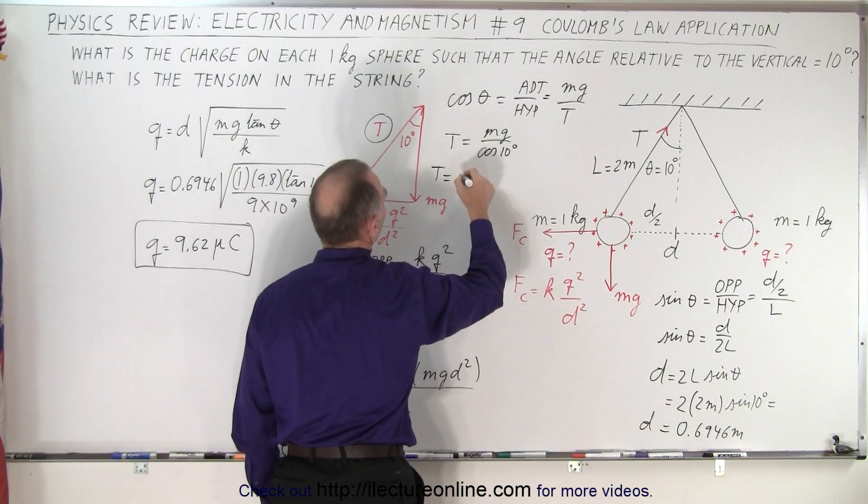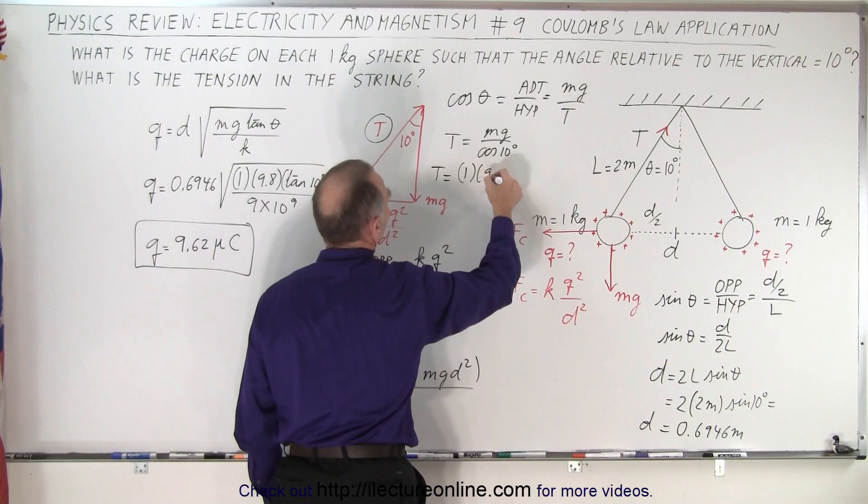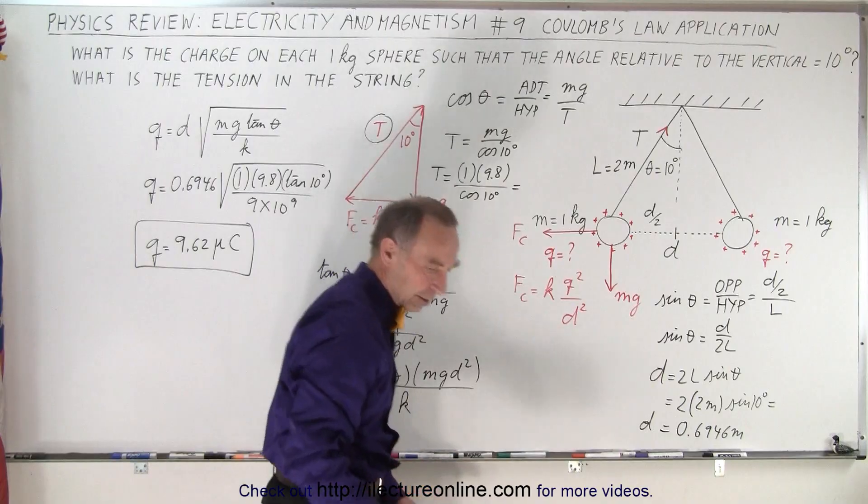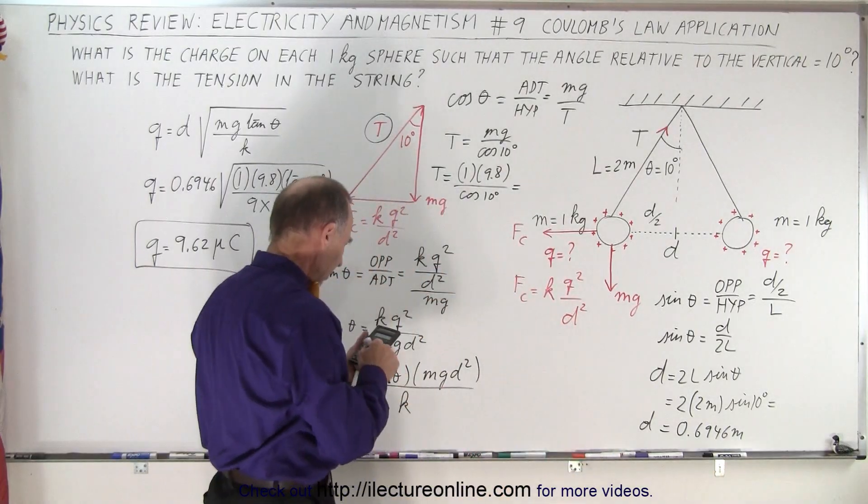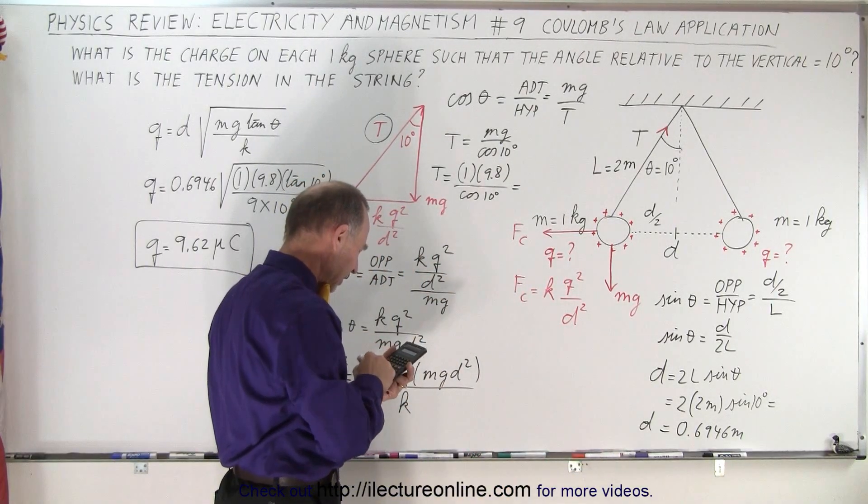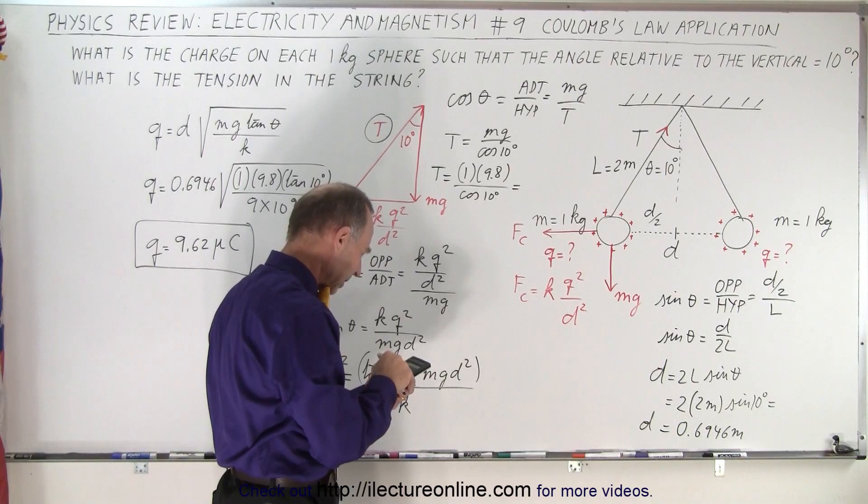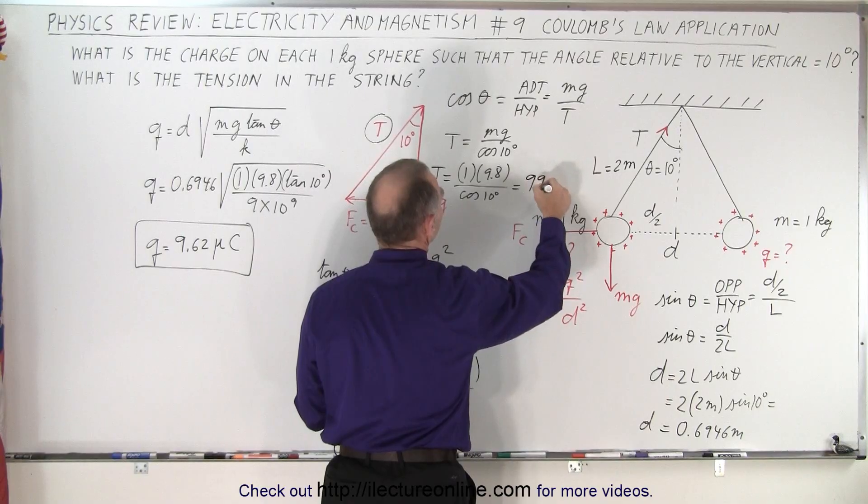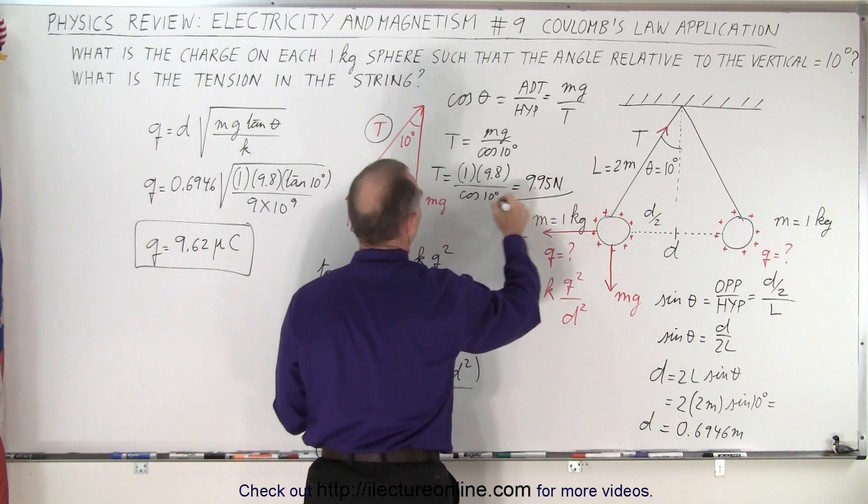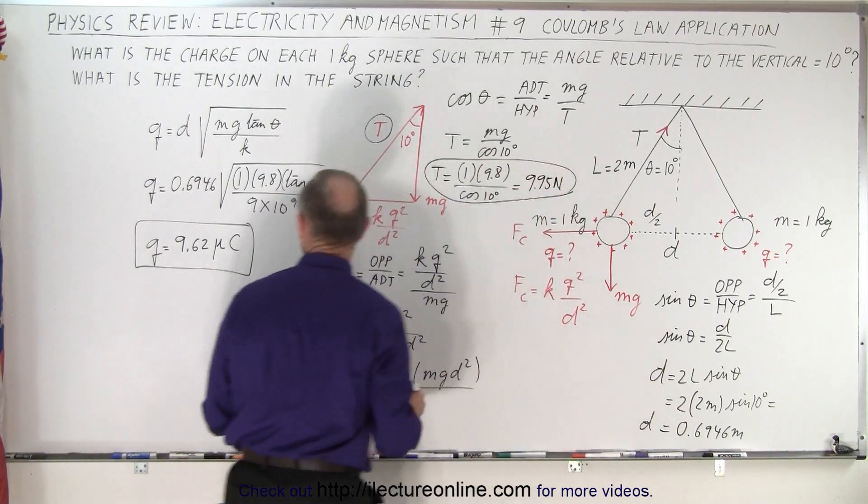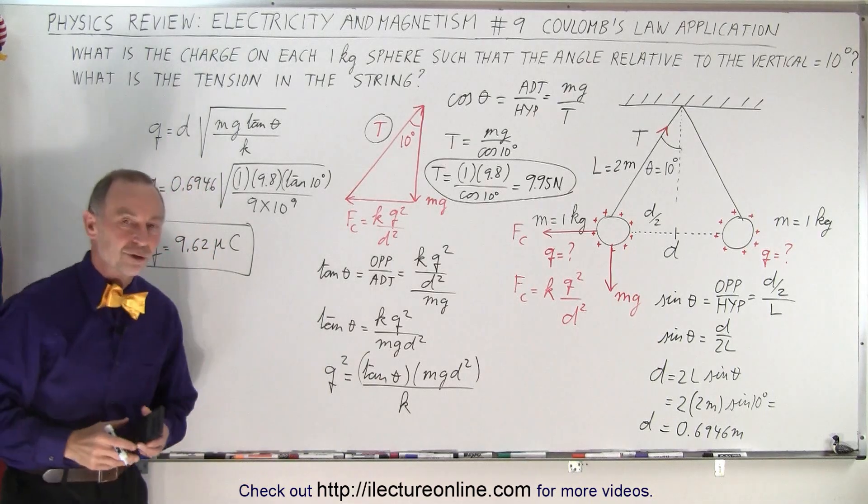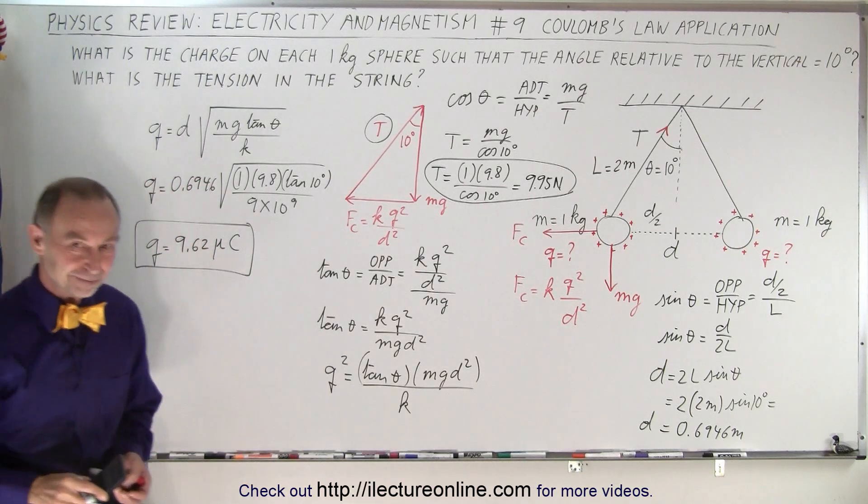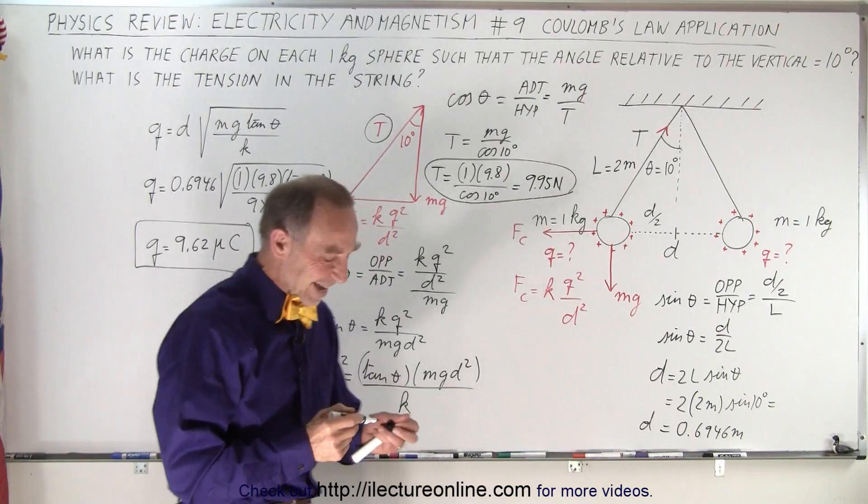So the tension is equal to 1 times 9.8 divided by the cosine of 10 degrees, and 9.8 divided by 10, take the cosine, and that would be 9.95 newtons. So that gives you the tension, and here we have the charge, and that is how it's done. So you have to worry about your units here. Yeah, I skip on the units because it would become pretty messy.